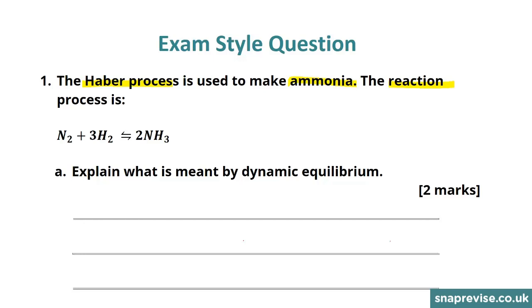And you can see from the double arrow that this reaction is reversible. Nitrogen and hydrogen can react together to produce ammonia, but ammonia can also break down in order to produce nitrogen and hydrogen.